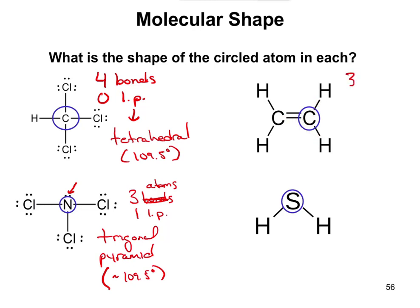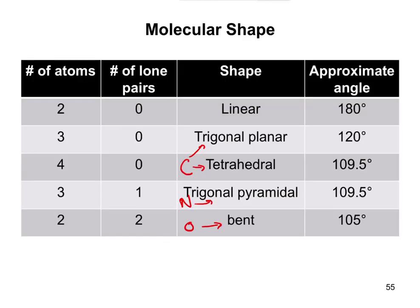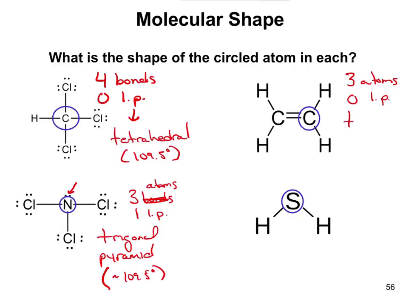We'll say three atoms. That carbon has no lone pairs. Going over here, three atoms, no lone pairs, it's going to be trigonal planar, different than the one we just did down here where we had three atoms and one lone pair. Now we don't have a lone pair, so this one's going to be trigonal planar,